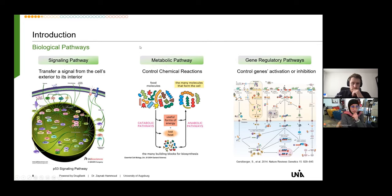Biological pathways are mainly classified into three categories: signaling pathways, which describe the transfer of a signal from the cell's exterior to its interior; metabolic pathways, which control chemical reactions; and gene regulatory pathways, which control gene activation or inhibition.